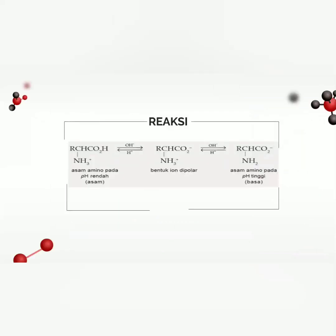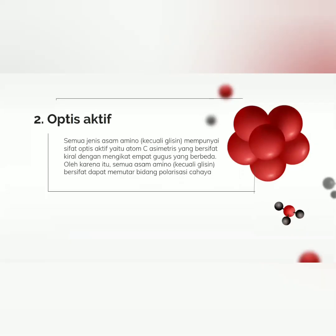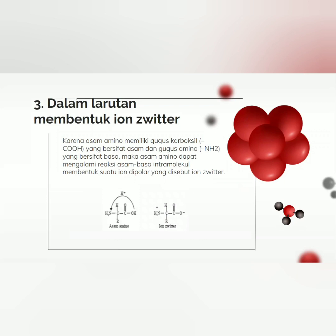Ini adalah gambaran dari reaksi sifat amfoter. Yang kedua yaitu optis aktif. Semua jenis asam amino, kecuali glisin, mempunyai sifat optis aktif, yaitu atom C asimetris yang bersifat kiral dengan mengikat empat gugus yang berbeda. Oleh karena itu, semua asam amino kecuali glisin bersifat dapat memutar bidang polarisasi cahaya. Yang ketiga, dalam larutan membentuk ion zwiter, karena asam amino memiliki gugus karboksil -COOH yang bersifat asam dan gugus amino -NH2 yang bersifat basa, maka asam amino dapat mengalami reaksi asam basa intramolekul membentuk suatu ion dipolar yang disebut ion zwiter.